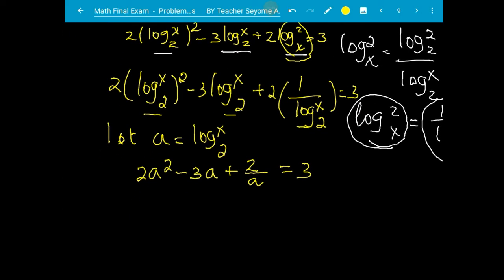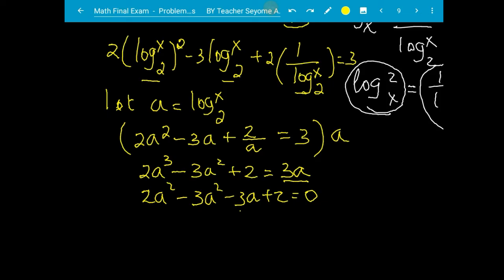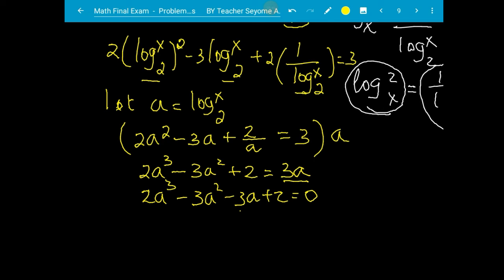Now solve this by multiplying both sides by a to eliminate the denominator. The equation becomes: two a cubed minus three a squared minus three a plus two equals zero, after transferring three a from the right side to the left side making it negative. There is no common factor, so it cannot be factorized easily — we can use the rational root test. Note: the leading term is two a cubed.